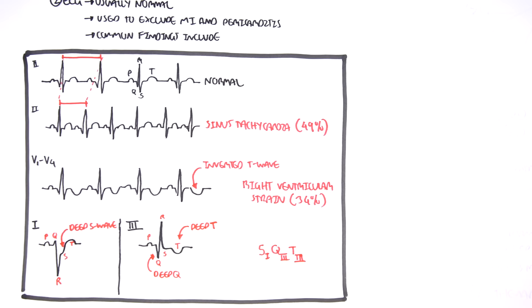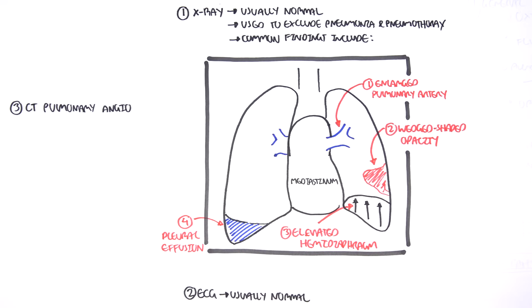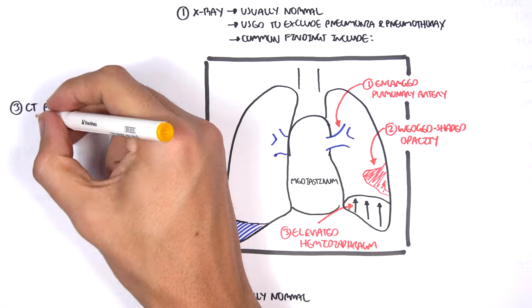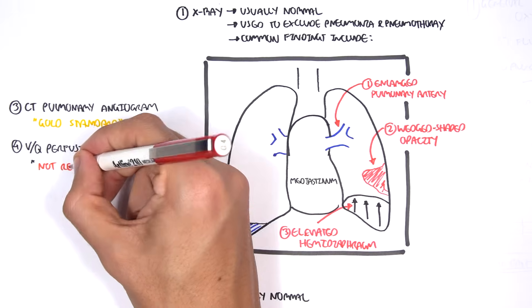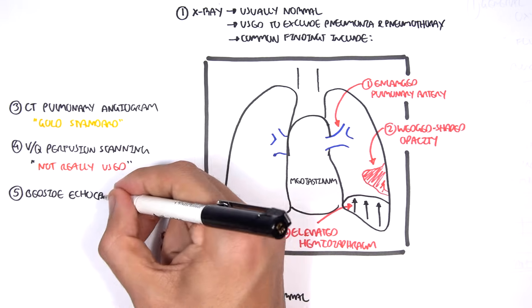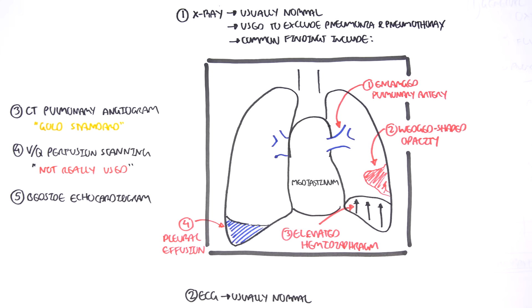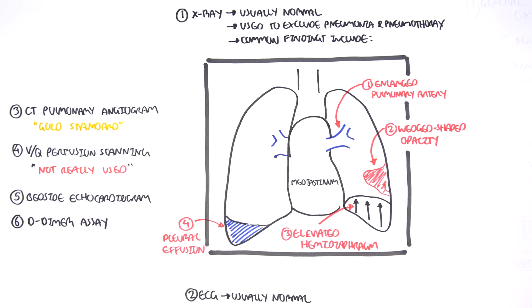Other investigations that can be performed is your CT pulmonary angiogram, which is the gold standard for finding out if the person has PE. You can also do a V/Q perfusion scanning test. What I mean by not really used is that it's not as definite. You usually use a CT pulmonary angiogram. Five, you can do a bedside echocardiogram. And six, you can do a D-dimer assay, which we will look into in more detail next.